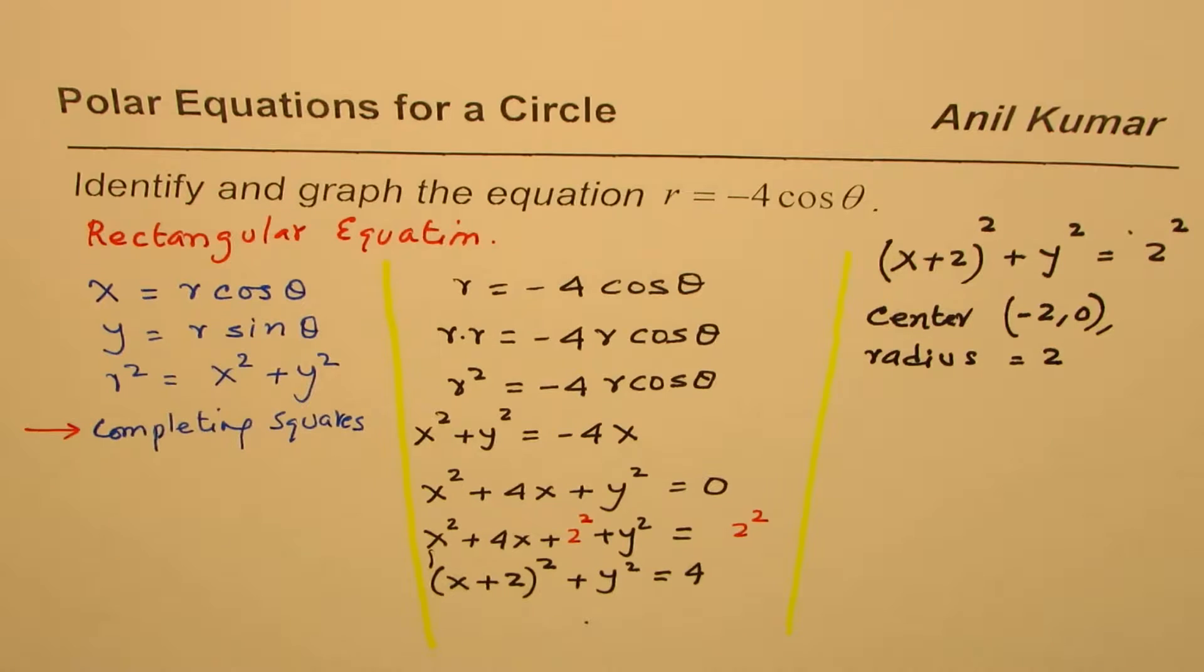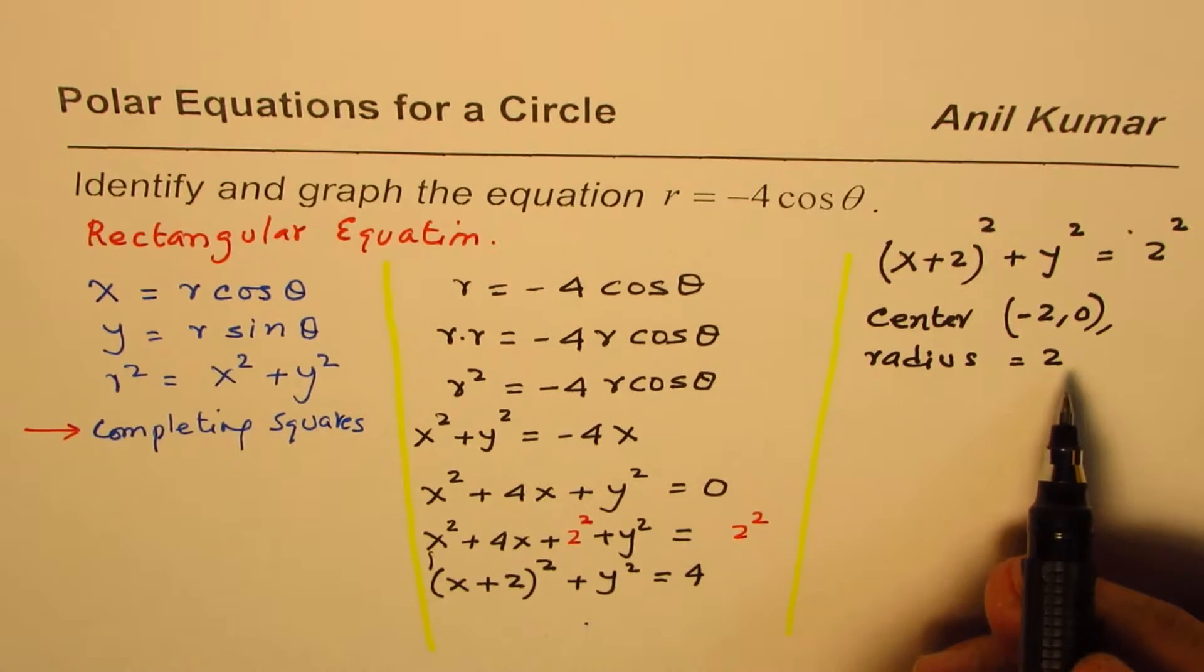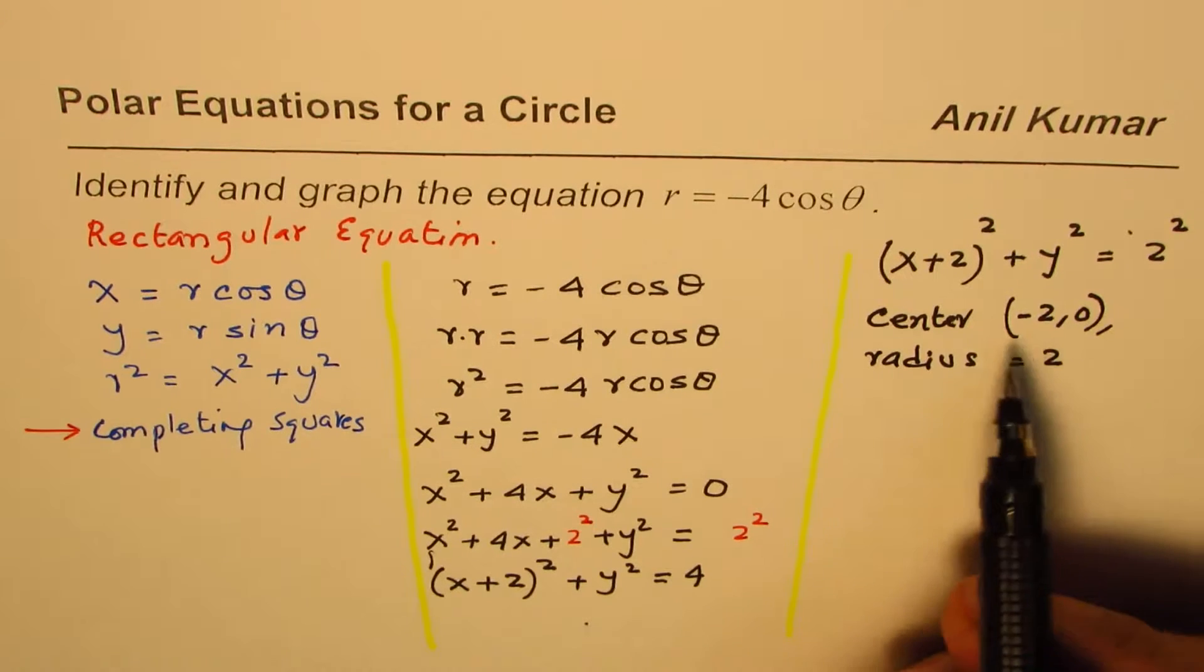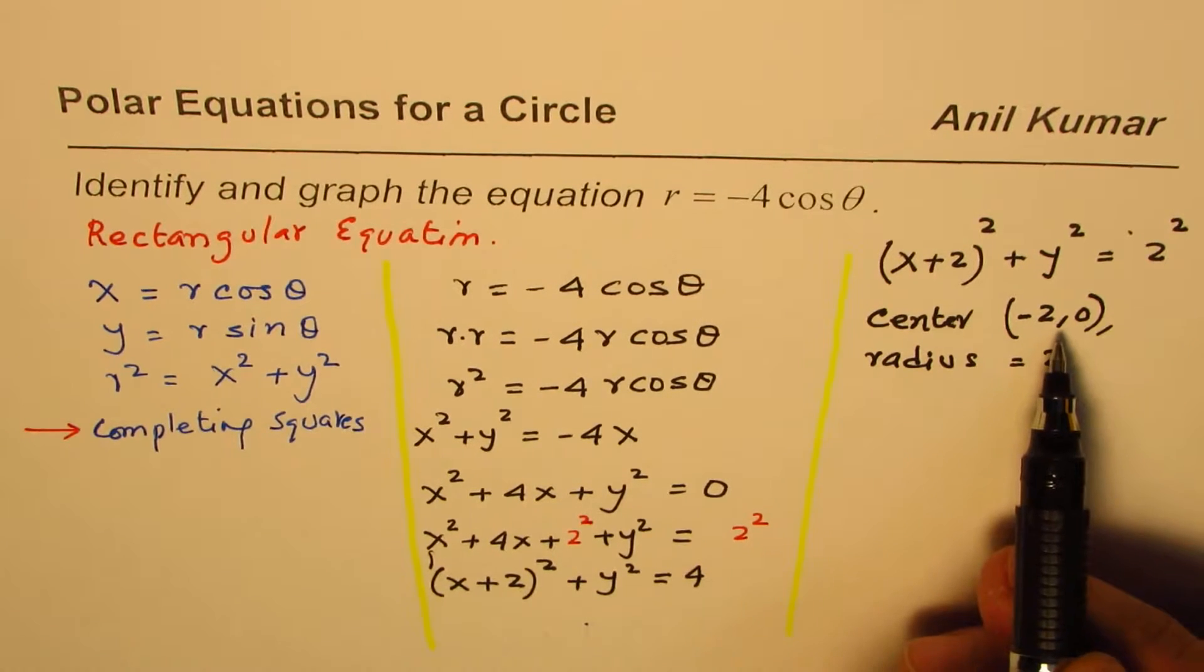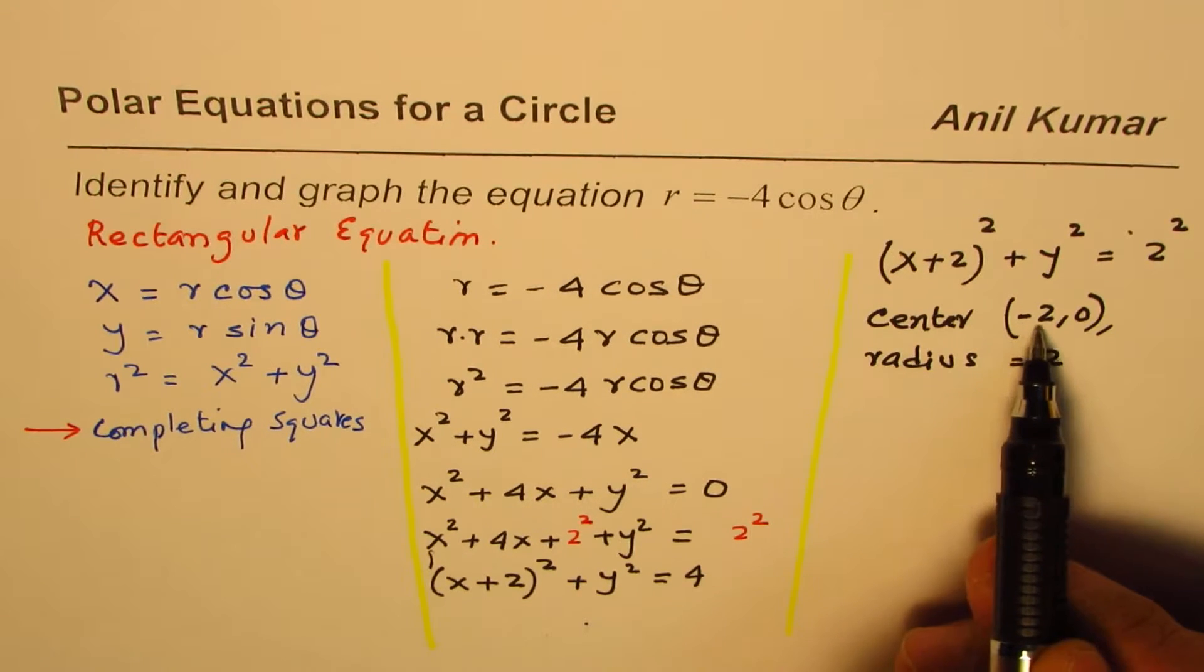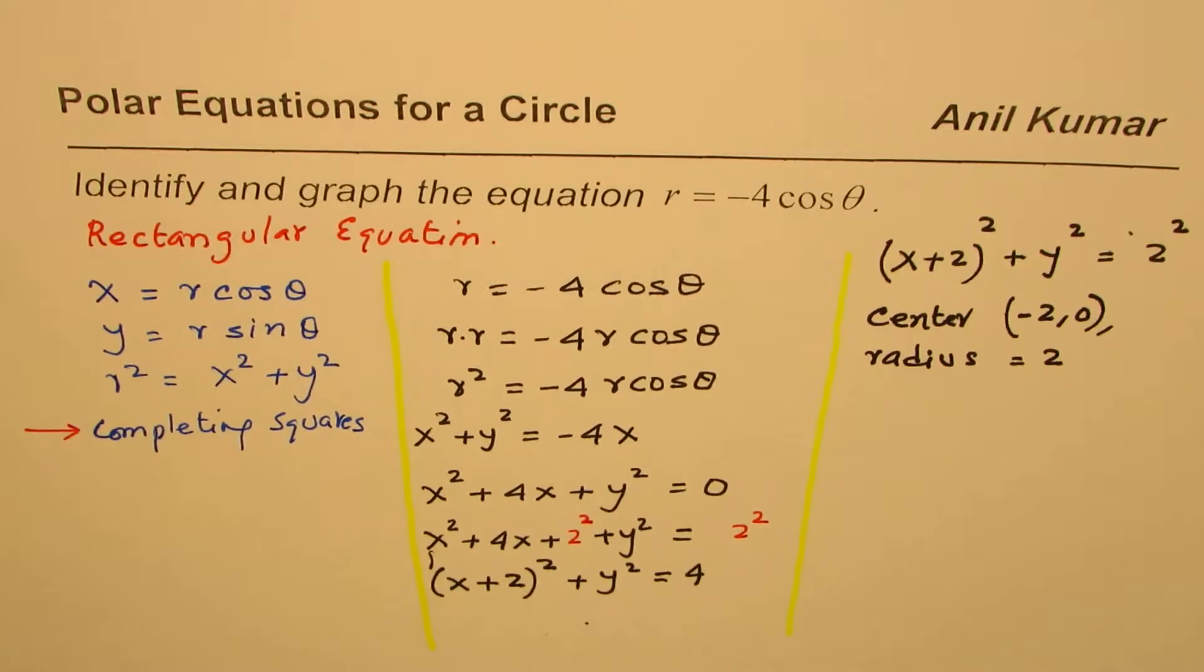So, that is this circle. So, the radius is 2 units. So, what we see here is that the center has moved from the center of a circle, translated 2 units to the left. So, that is what has happened here. So, we could sketch this.